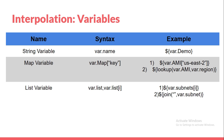For a string, it's simply dollar var dot name. For a map, you have to give the key — for example var dot AMI with the key us-east-2 to get the AMI value for that specific region. You can also use the lookup function with var dot AMI and the region, and it will return the AMI for that particular region. For a list, var dot subnet gives the item at a specific index. You can also use join with a separator character to combine multiple list items into one string.